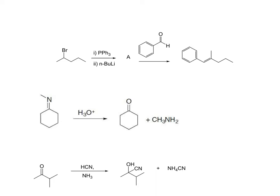Let's go over some key mechanisms we have seen. These aren't the only ones, but you should know everything we solved in class. Starting from an alkyl halide, treating it with PPh3 should be a Wittig reaction. Triphenylphosphine is going to carry out an attack in an SN2 manner.